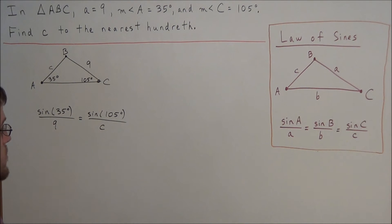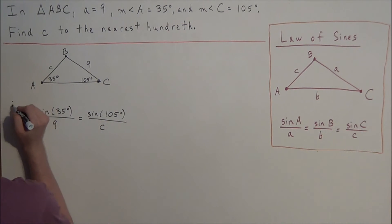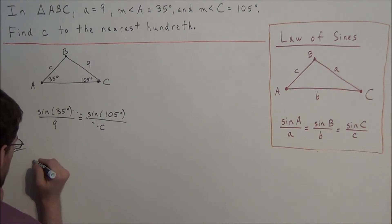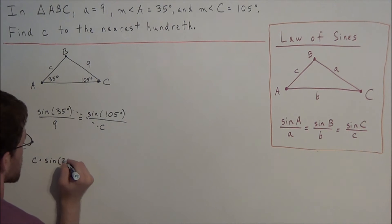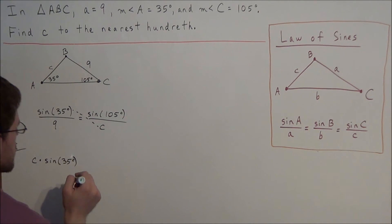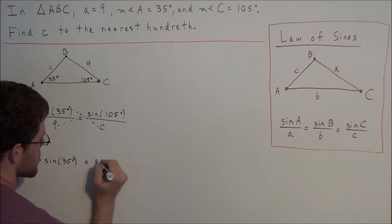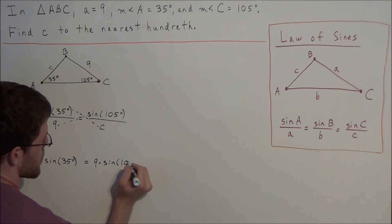So now to solve for little c, we can cross multiply and set up a new equation. So we can call this equation 1. For equation 2, we're looking at c times sine 35, or sine of 35 degrees, the units of measurement are important, is equal to 9 times sine of 105 degrees.